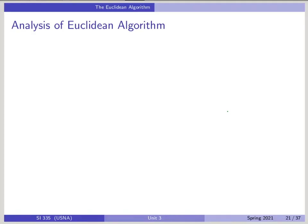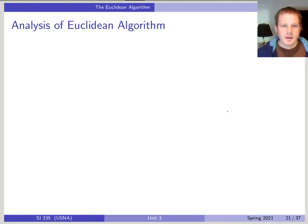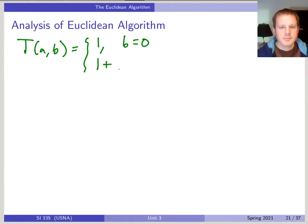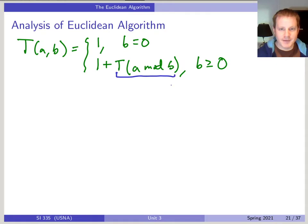Let's think about the analysis. This is an algorithms class, so we want to worry about analysis, and there's an interesting case here. The cost really depends on the size of the second argument. We can write the running time as T(b) = 1 when b=0, or 1 + T(a mod b) when b ≥ 0. But we've never seen anything like T(a mod b) — what can we do about that?